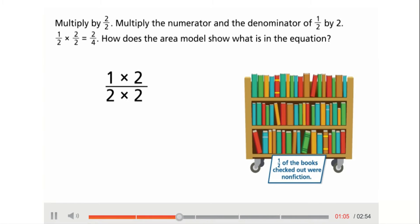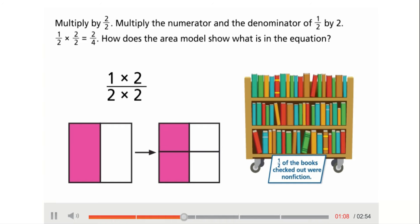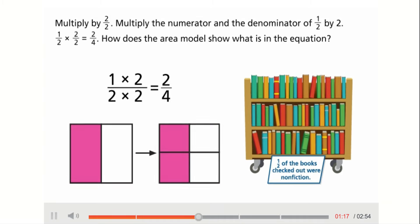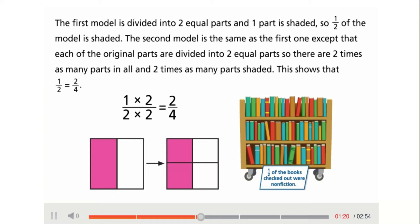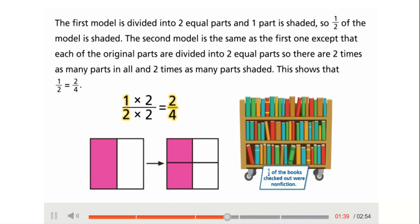Multiply by two-halves: multiply the numerator and the denominator of one-half by two. The result is two-fourths. The first area model is divided into two equal parts and one part is shaded, so one-half of the model is shaded. The second model divides each original part into two equal parts, giving two times as many parts in all and two times as many parts shaded. This shows that one-half equals two-fourths.